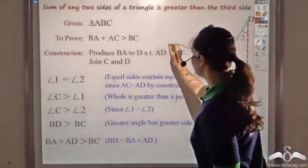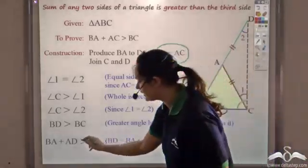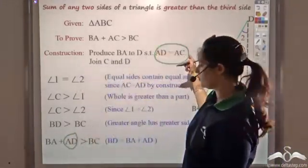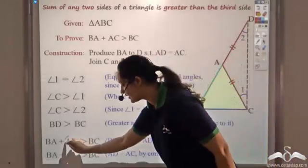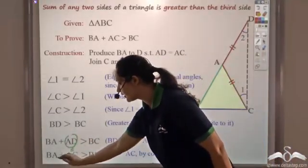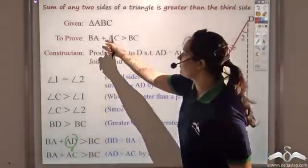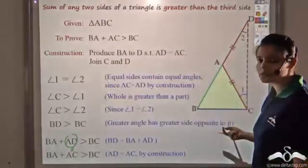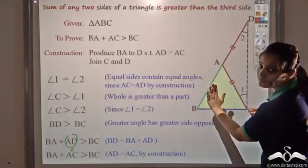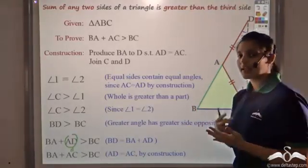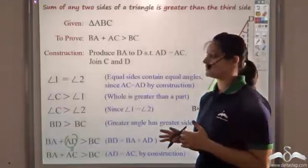We know that AD equals AC, so instead of AD we can write AC. Therefore BA plus AC is greater than BC. This is exactly what we wanted to prove. In fact, you can pick any two sides — for example AB and BC — and prove that their sum is greater than AC. So for any two sides in a triangle, the sum of those two sides is greater than the length of the third side.